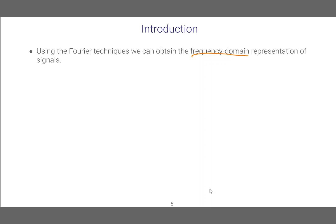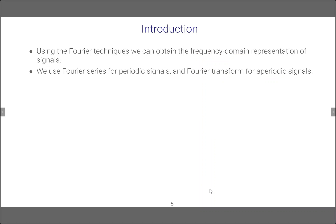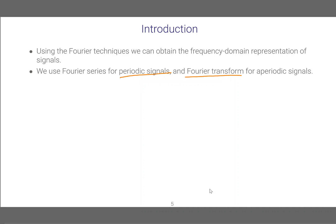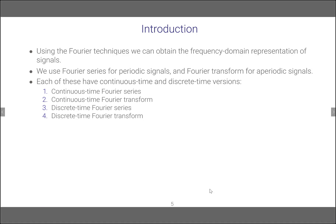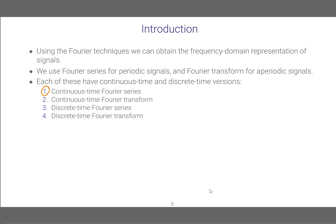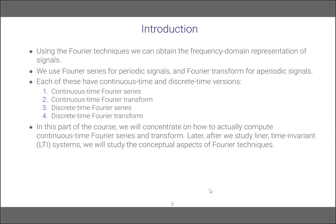Given a time domain signal — in this case a periodic signal — obtaining the frequency domain representation, which is the Fourier series coefficients, is what we are trying to study. We use Fourier series for periodic signals and Fourier transform for aperiodic signals. Each of these has continuous time and discrete time versions: continuous time Fourier series, continuous time Fourier transform, discrete time Fourier series, and discrete time Fourier transform. In this lesson we will study the continuous time Fourier series.